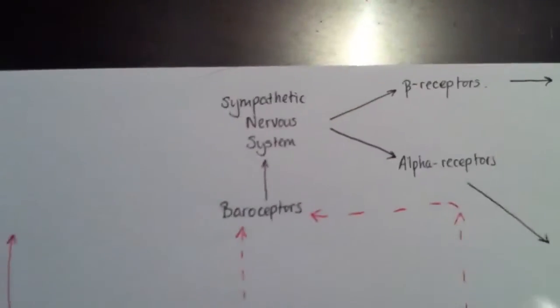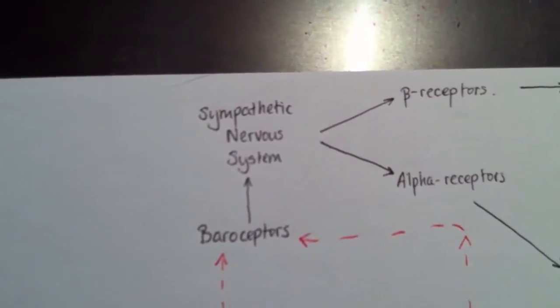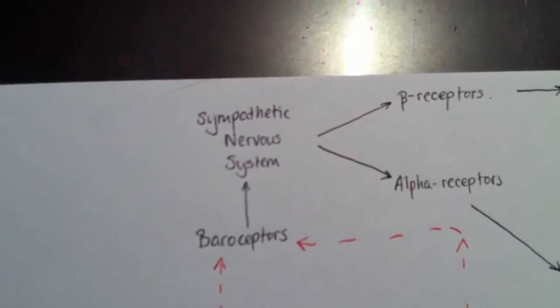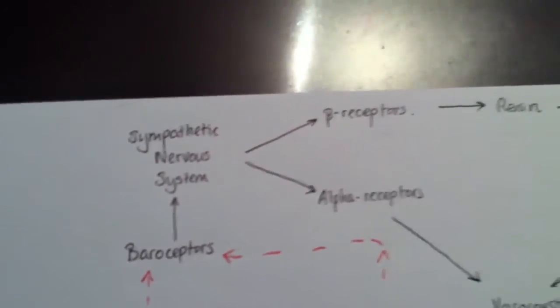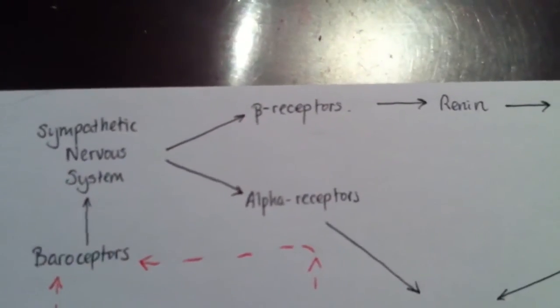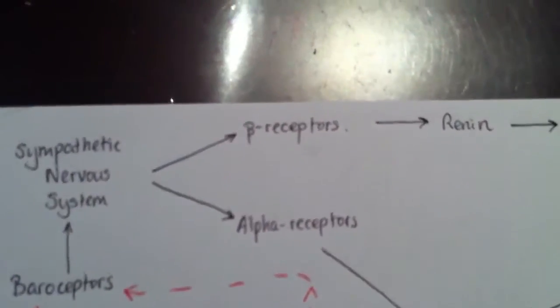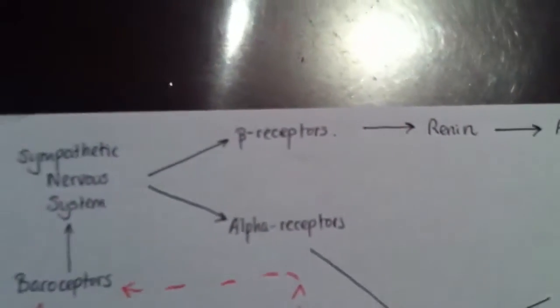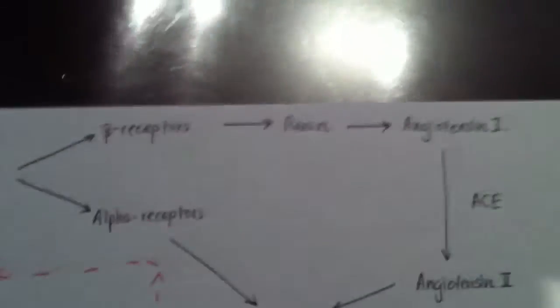and this reduced cardiac output causes the baroreceptors to be activated and then activate the sympathetic nervous system. So when the sympathetic nervous system is activated, it releases catecholamine, and catecholamine can bind to beta receptors and alpha receptors. So when it's bound to beta receptors,